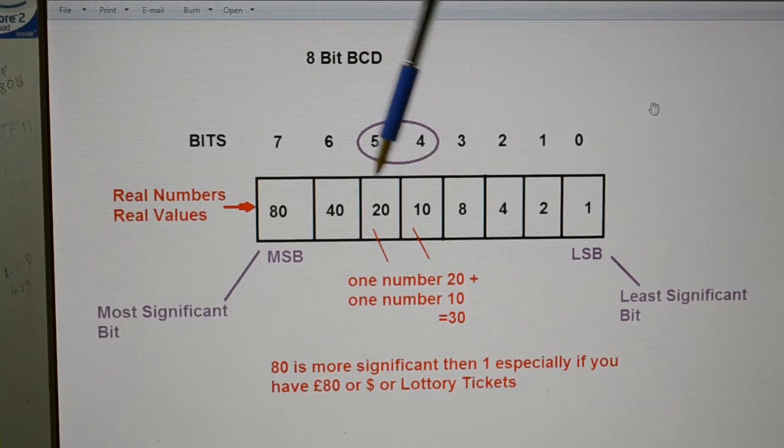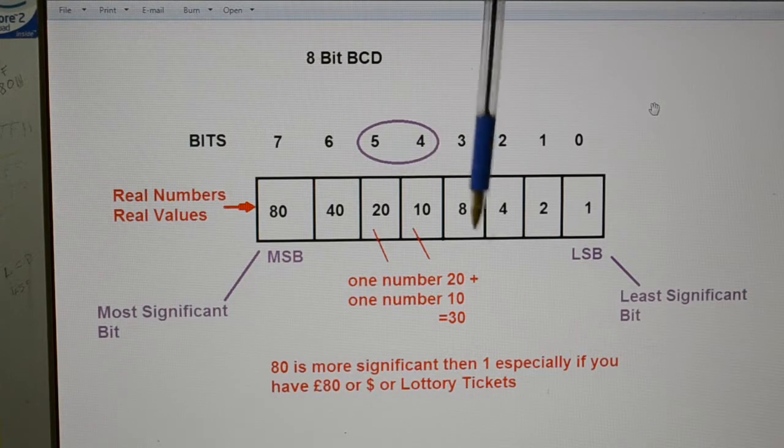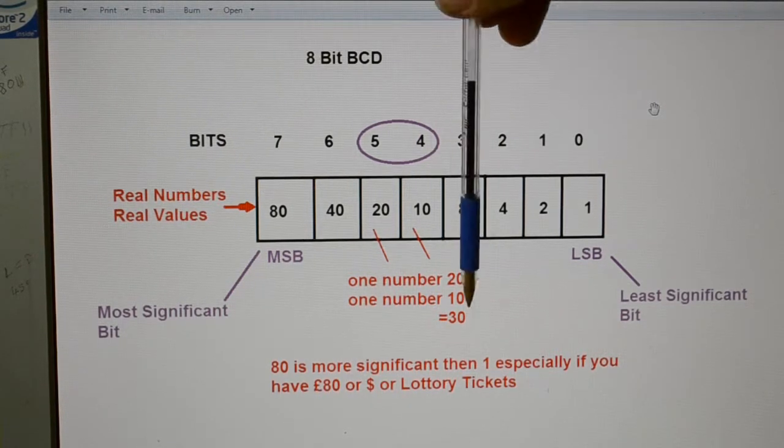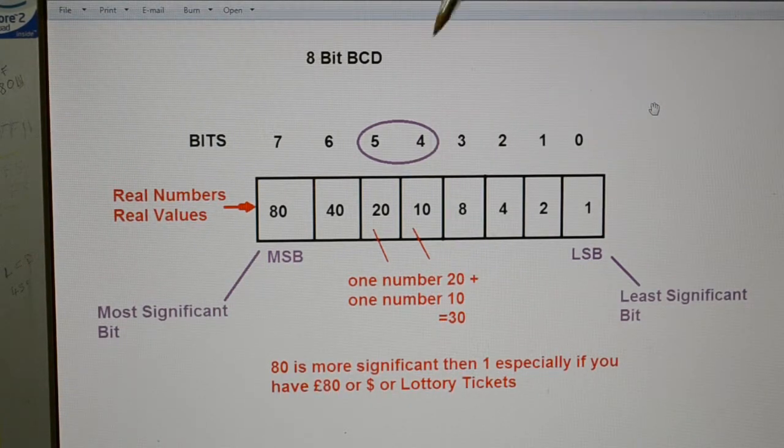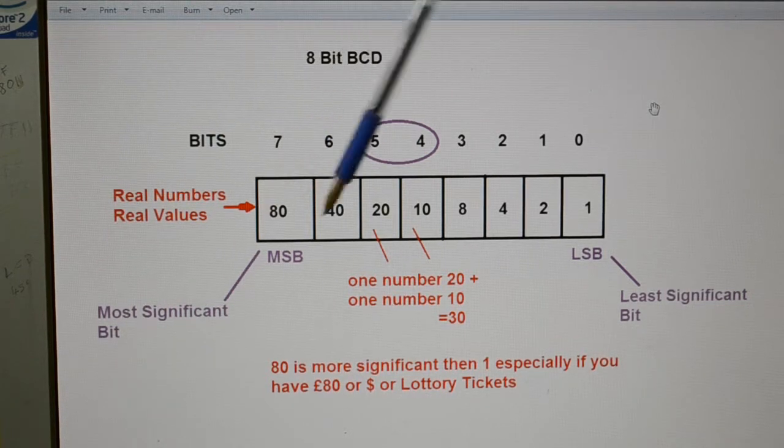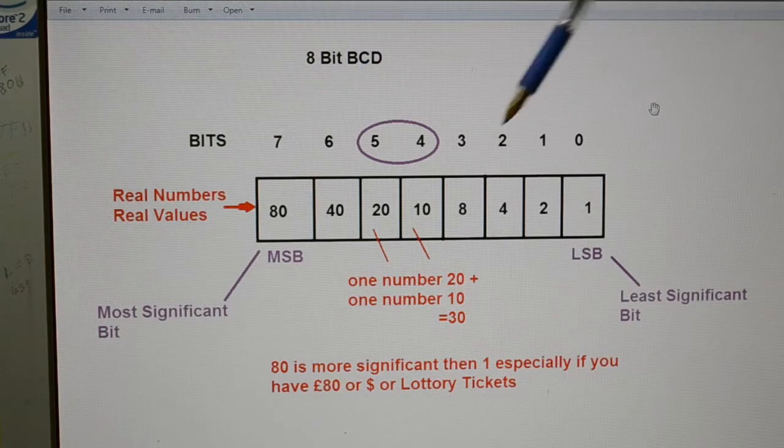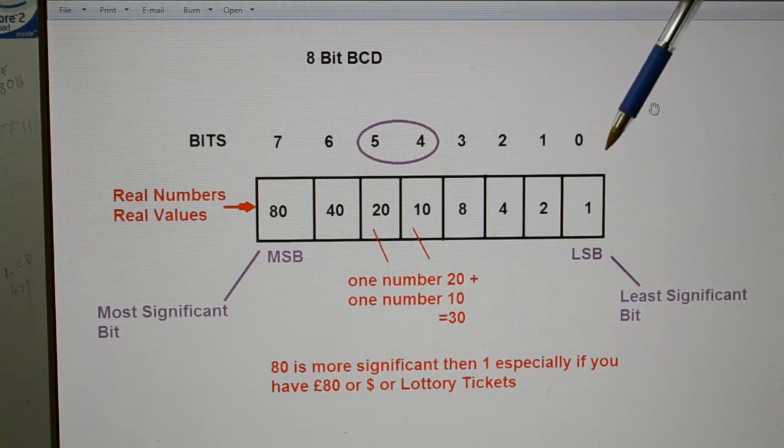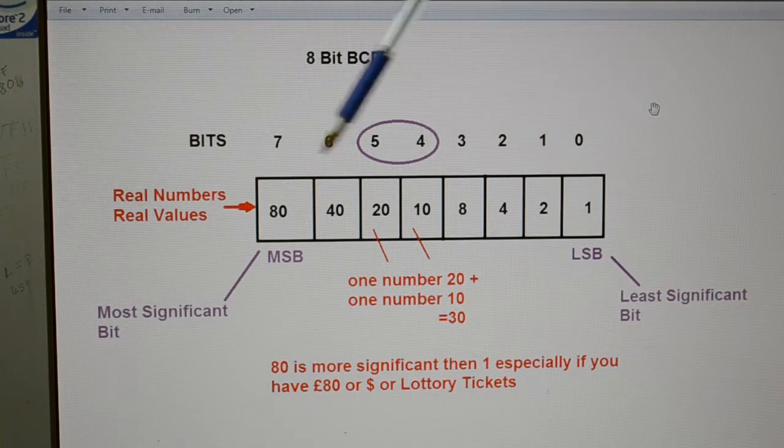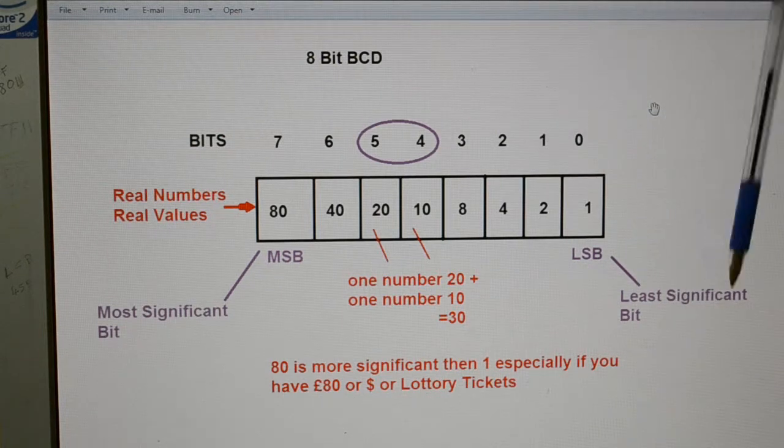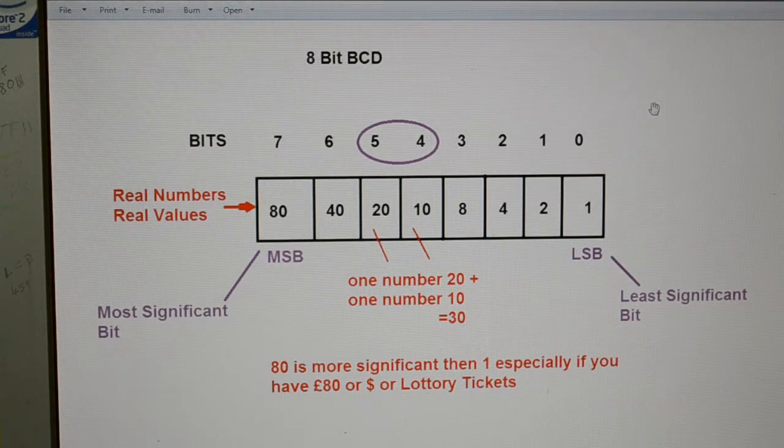So we've got one of these and one of these. A 10 and a 20. 20 plus 10 equals 30. So it's still simple. That's the most significant bit. Bit 7. So there's 8 bits, but why is it bit 7? Because we start, 0 is a number. So 0, 1, 2, 3, 4, 5, 6, 7. So 0, that's the least significant bit. Most significant bit.